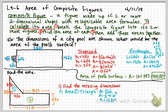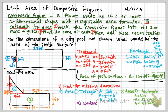For the rectangle: A = length times width. The length is 12 and the height is 4, giving us 48 square feet. The last step is to combine the areas: 12 plus 48 equals 60 square feet.